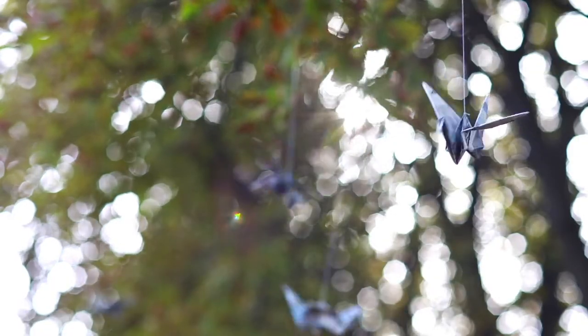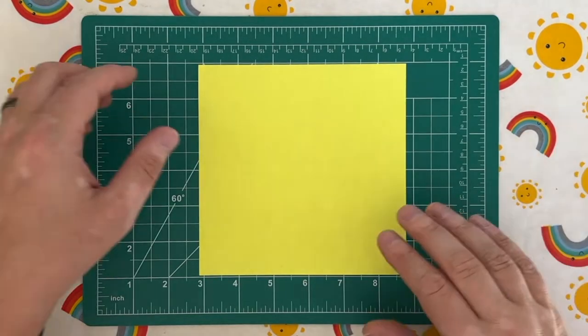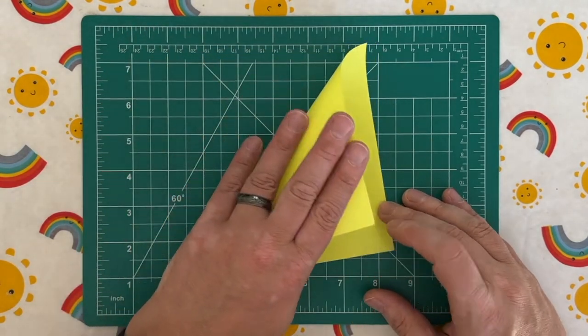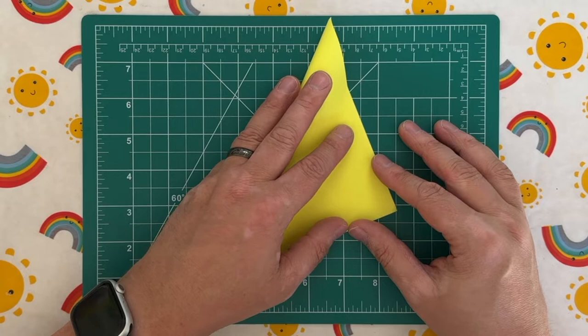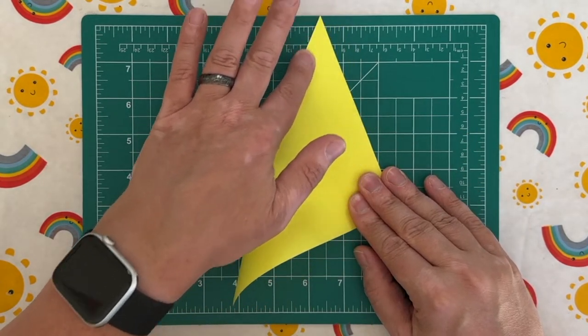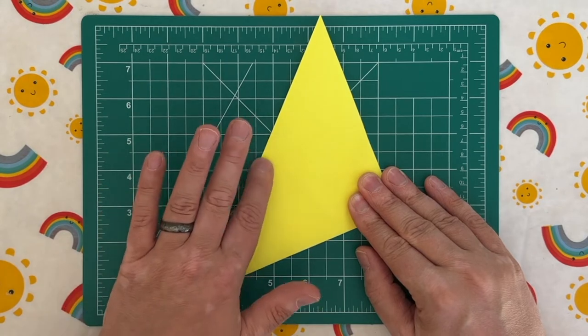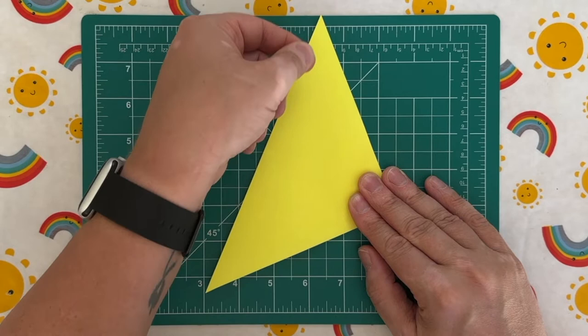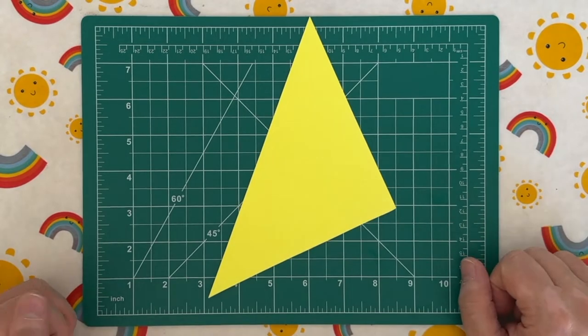Our first fold is to take this corner and fold it across to the other corner. So line our edges up and then push outwards to each side to fold. And what I do remember is it's important to make sure that those folds are nice and sharp, so use the back of your nail to fold them across like so.